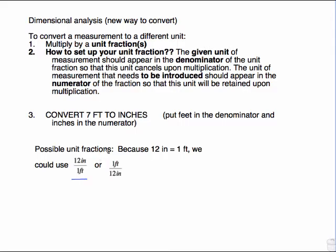The given unit of measurement should appear in the denominator of the unit fraction so that this unit cancels. So we want to convert 7 feet to inches. I put 7 feet over 1, and I'm going to multiply this by a particular unit fraction. I need to do the one that puts feet on the bottom here because I want to have feet cancel out, and if the feet cancel out, I will be left with inches, which is what I want. So one foot has 12 inches in it.